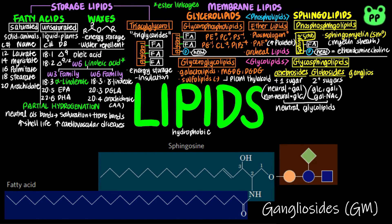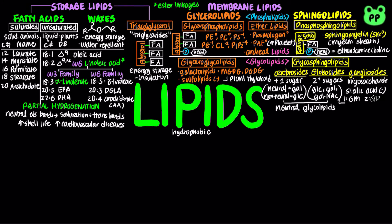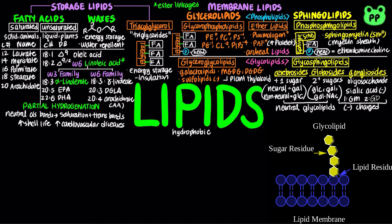The third type of glycosphingolipids are gangliosides, which have oligosaccharides as their polar head groups and one or more residues of negatively charged N-acetylneuraminic acid, also known as sialic acid, at the terminus. Gangliosides with one sialic acid are in the GM series (M for mono), those with two are in the GD series (D for di), and so on. Glycosphingolipids are found in the outer membrane and function in biological recognition, including defining human blood groups and determining compatible blood for transfusions.